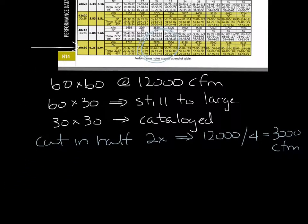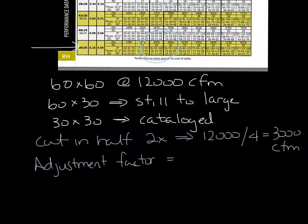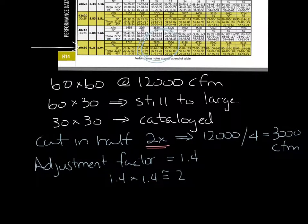Now you use an adjustment factor of 1.4 to determine the throw. Since you cut the grill in half twice, you need to multiply 1.4 times 1.4, which equals 1.96 — we're going to call it 2. So the throw of the 60 by 60 grill will be 2 times the throw of the 30 by 30 grill.